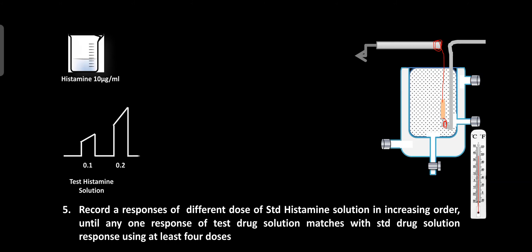Record the baseline for 30 seconds, then add 0.1 ml of standard histamine solution (10 micrograms per ml) and record the response for 30 seconds. After 30 seconds, wash the tissue. After the washing period, record the baseline again, then add 0.2 ml of standard histamine solution and record the response for 30 seconds.